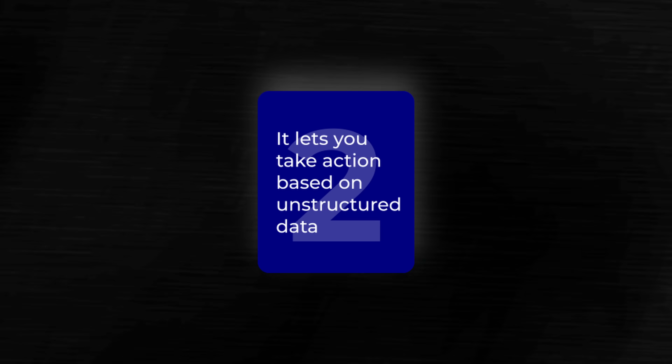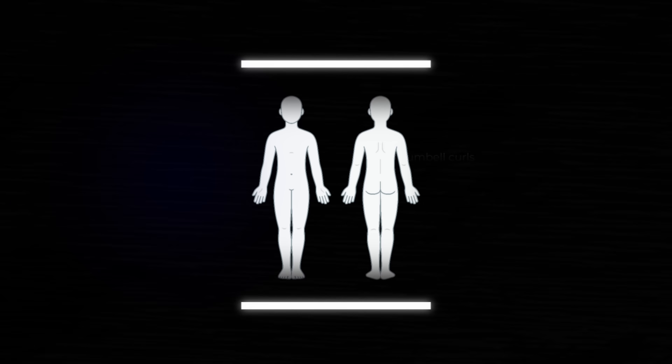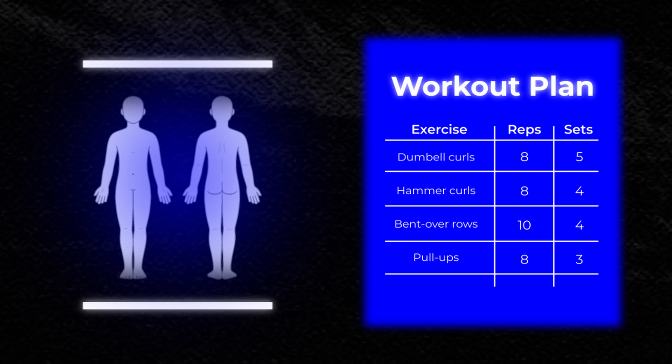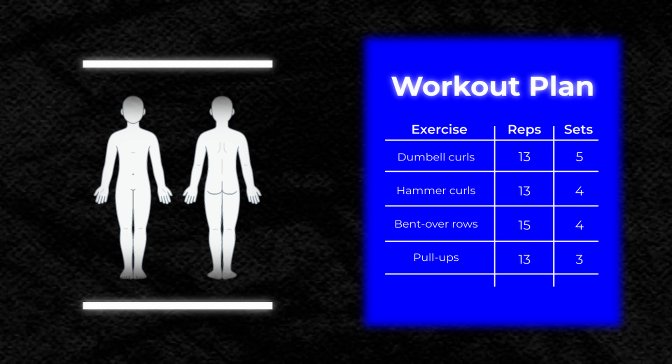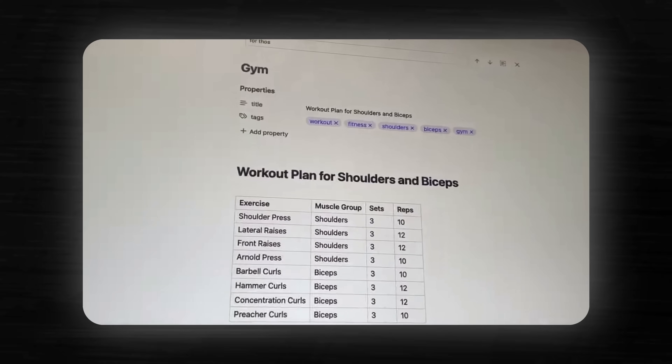The second major advantage AI has is that it lets you take action based on unstructured data. For example, if I say to my smart home 'build me a workout plan focusing on my back and biceps,' AI will generate that with no problem. It can even look at my previous workouts and tailor its new output based on my previous performances. If I were to write that in traditional code, I wouldn't even know where to begin — that would be so intense to replicate. AI makes this easy. If you want to see how I created an automation that does just that, check the link in the description.